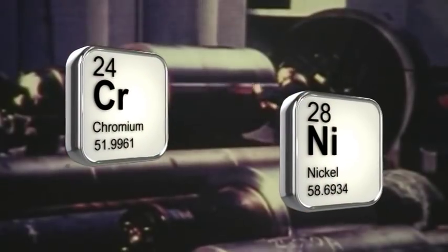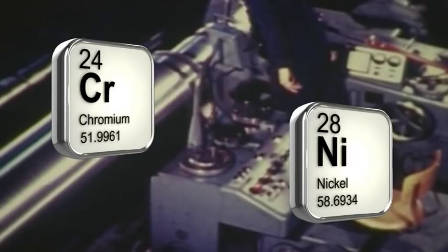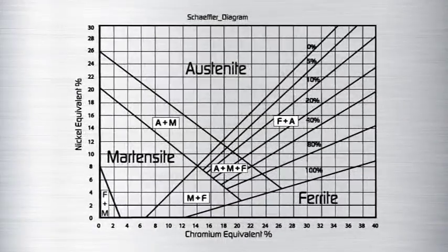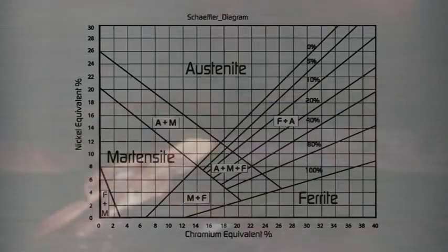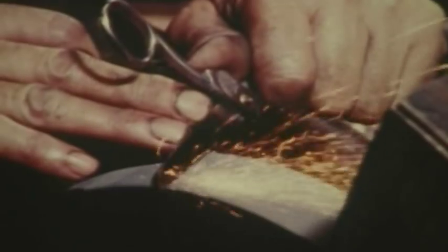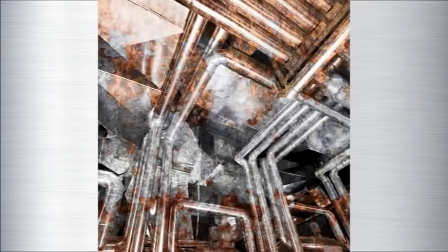Before we learn more about the unique role of niobium, we must first understand the differences between the main categories of stainless steel, which have been developed over the years for a range of applications. The balance of the elements chromium and nickel in the iron matrix dictates the category of stainless steel which is produced. It is generally accepted that the chromium level must be above about 12% for a steel to fully develop the resistance to rusting, which enables it to be classed as stainless.